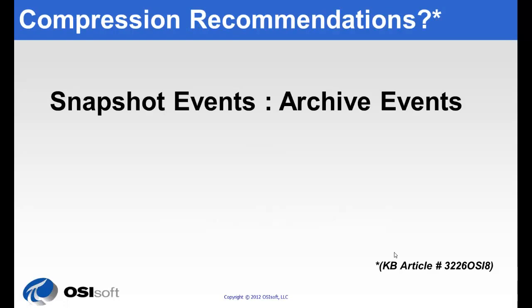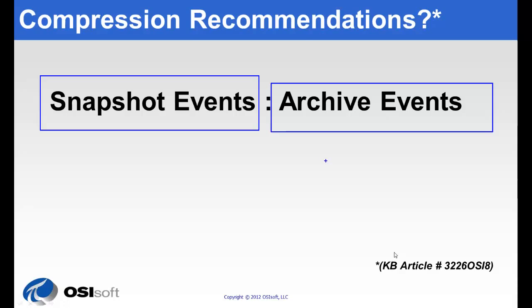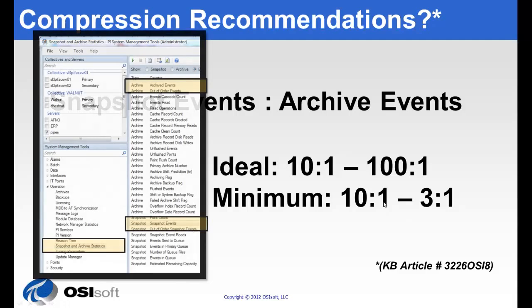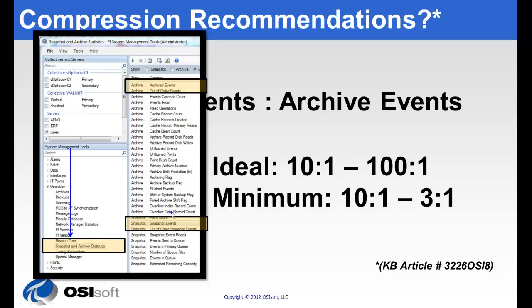Compression settings, we recommend this based on a ratio of the snapshot events to the archive events. Ideally, this is going to be a ratio of 10 to 1 or 100 to 1, and at minimum it should be a ratio of 10 to 1 or 3 to 1. Anything less than that is going to be pretty hard on the PI server. To check this, you can open up system management tools and go to snapshot and archive statistics and look at snapshot events and archived events to get your ratio.